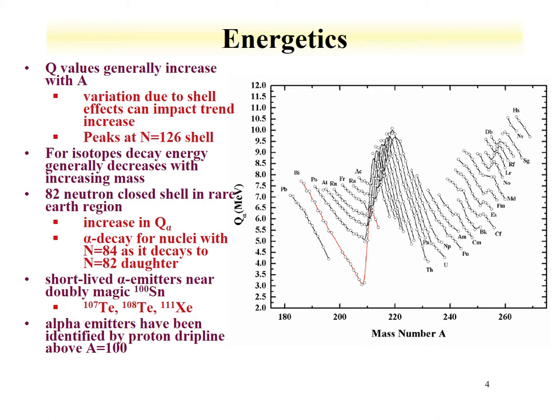Alpha emitters have also been identified near the proton drip line above A = 100. The proton drip line is the part of the chart of the nuclides right at the left-hand edge — the very light isotopes of the elements. In A above 100, if you inspect that area of the chart of the nuclides, you'll see some alpha emitters.